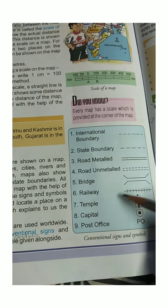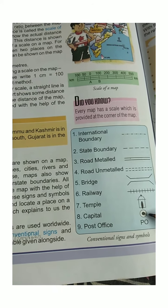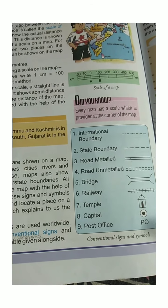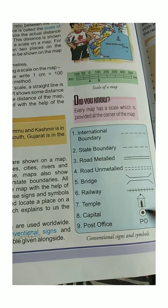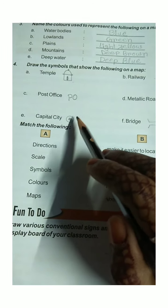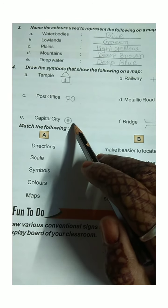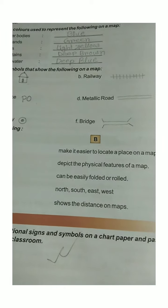The symbols also include: Railway, Temple, Capital, Post Office. Temple, Post Office, and Capital are real locations. Railway is represented by a real line. A Masonic road means bridge.